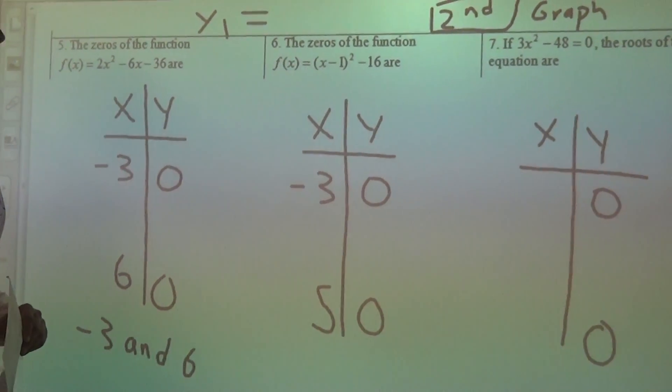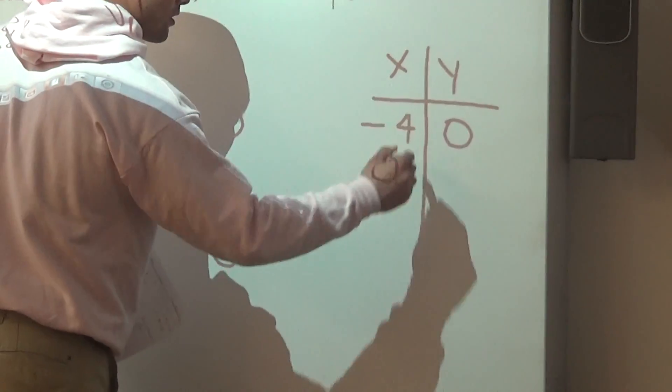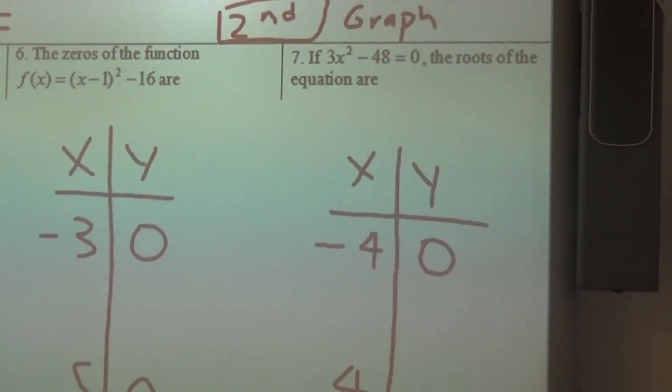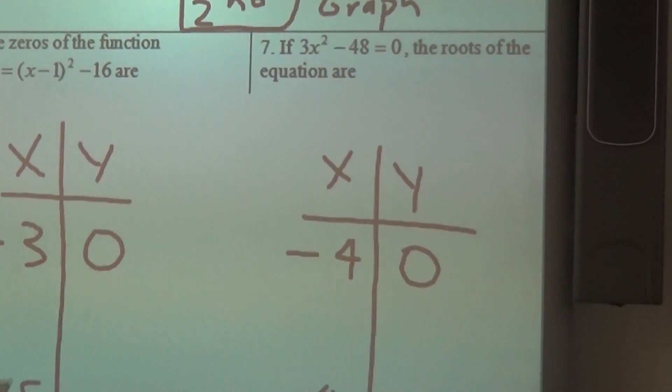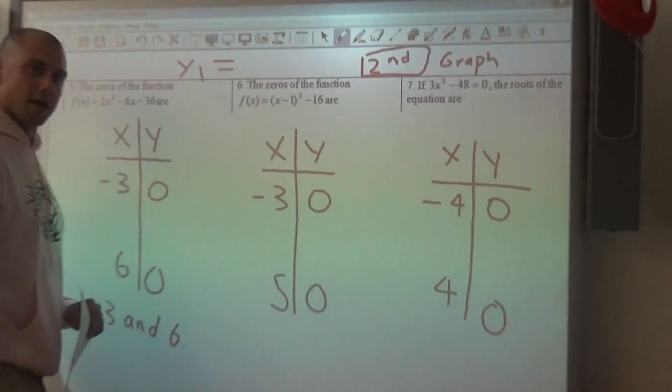And then the last one, you will find your zeros are negative 4 and positive 4. So again, after this, make sure you pause, go ahead, check your work, see if you can find the zeros on the table. Good job.